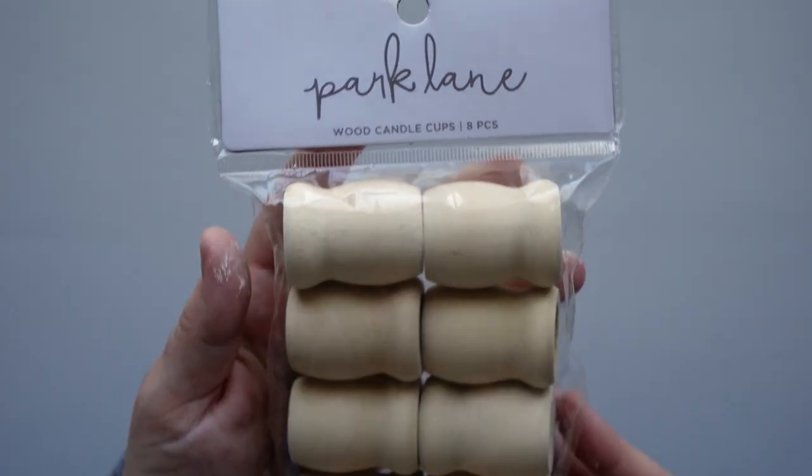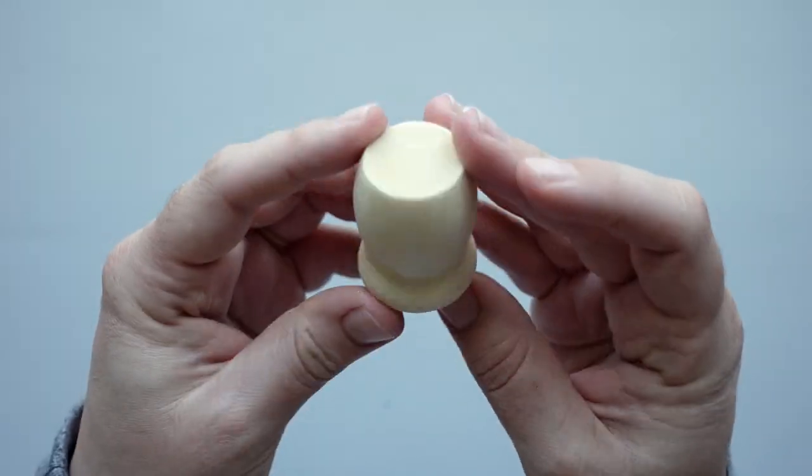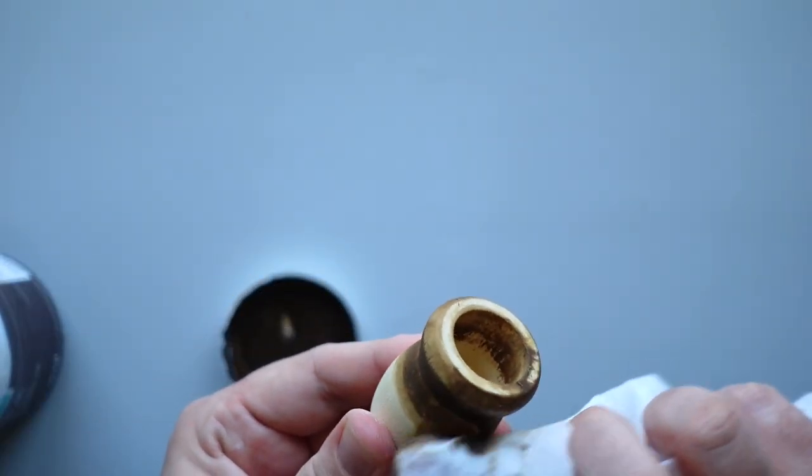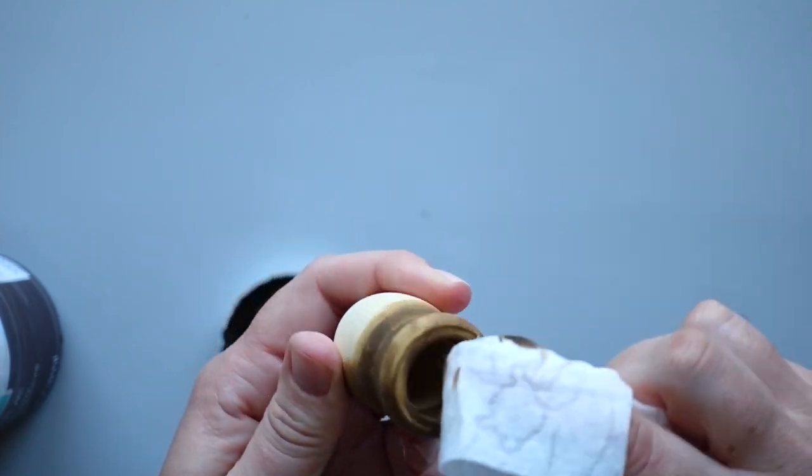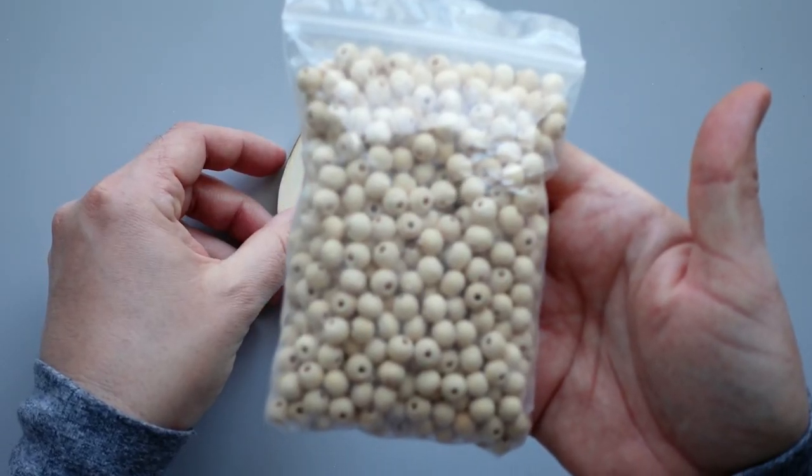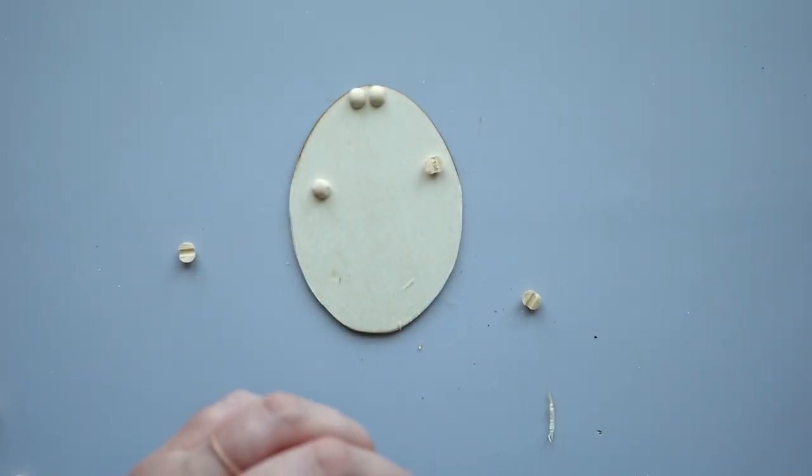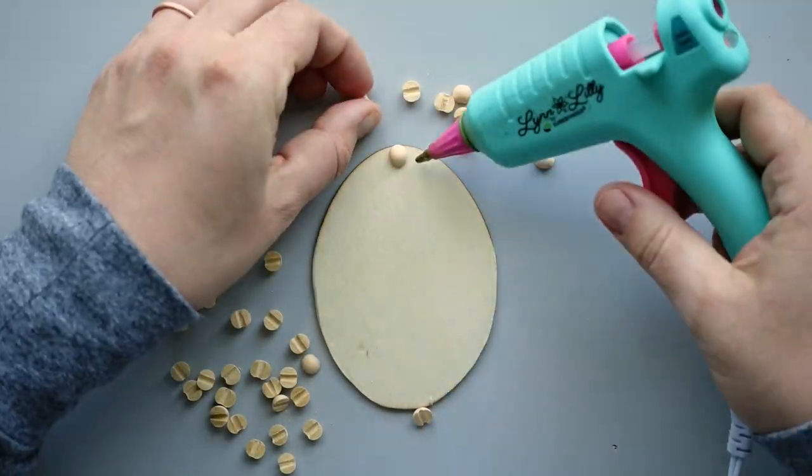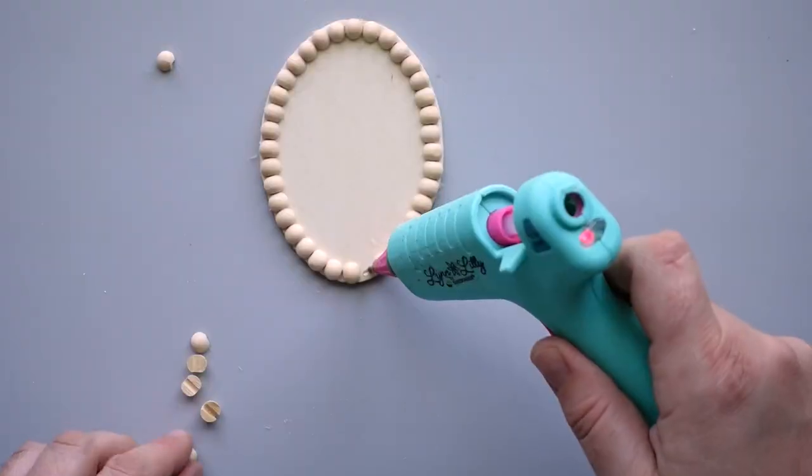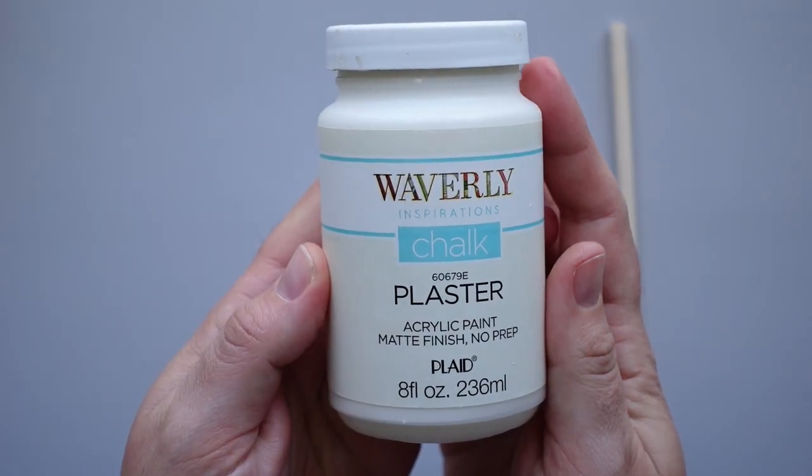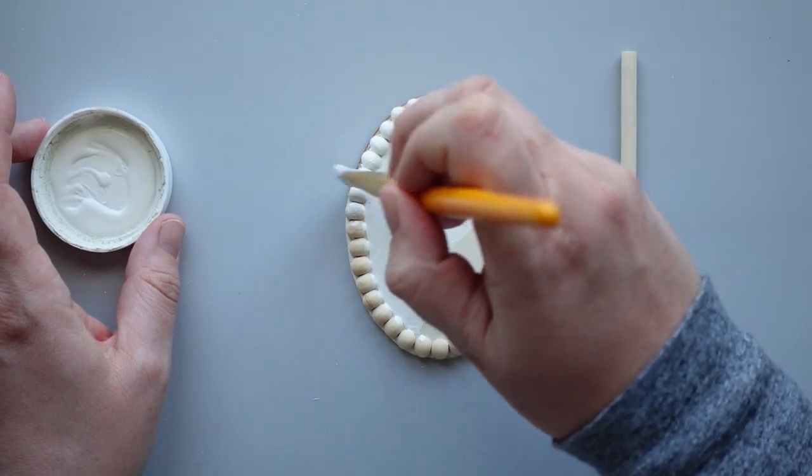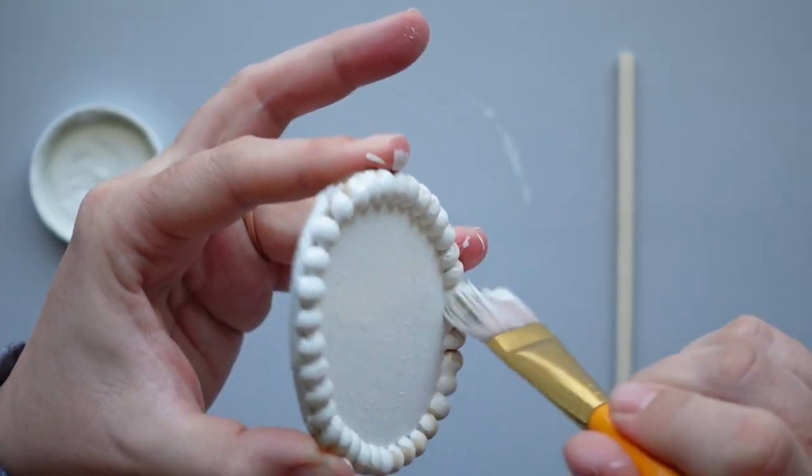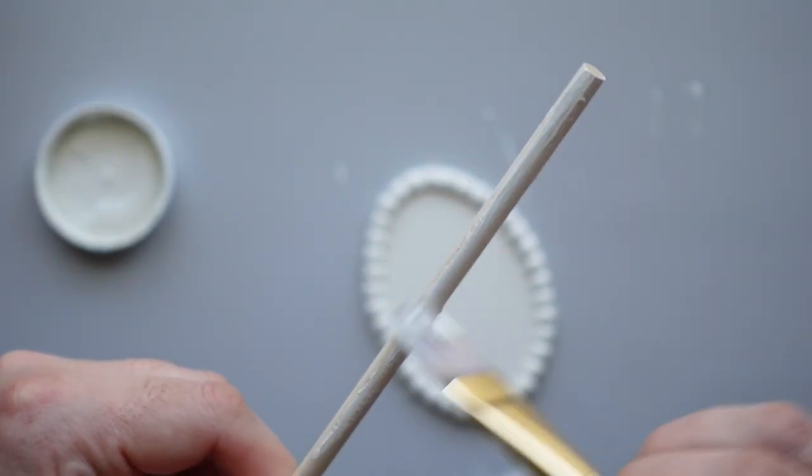For this next DIY, I started with a wood candle cup from a pack I picked up at Joanne. Using a baby wipe, I gave the candle cup a coat of antique wax and set it aside to dry. Next, I grabbed a flat wooden oval and several small wooden beads. I used my miter shears to cut the beads in half and secured them to the edge of the oval with some hot glue. Then, I gave the oval and beads a coat of chalk paint in the color plaster. I painted a short dowel rod using that same chalk paint.